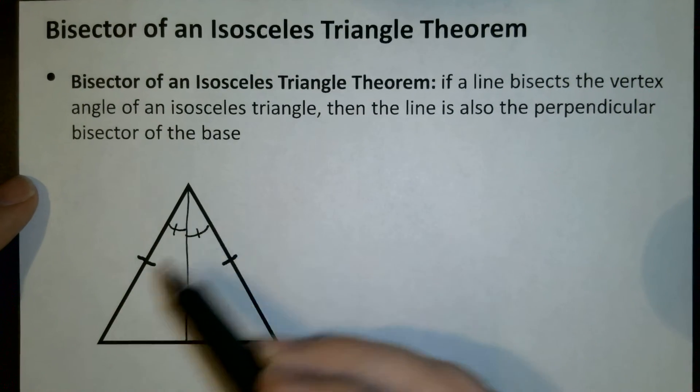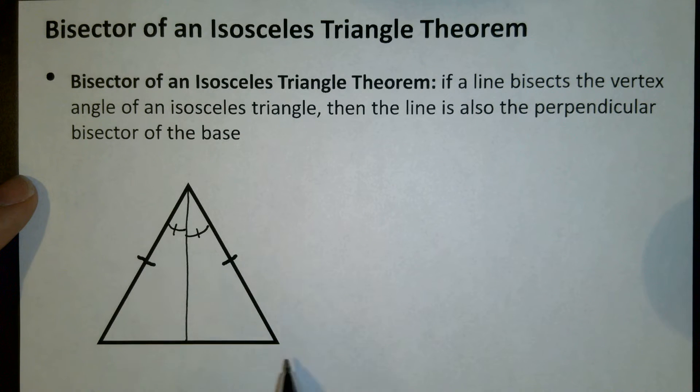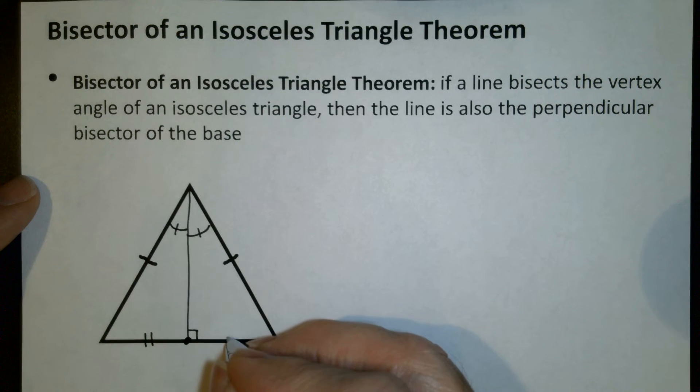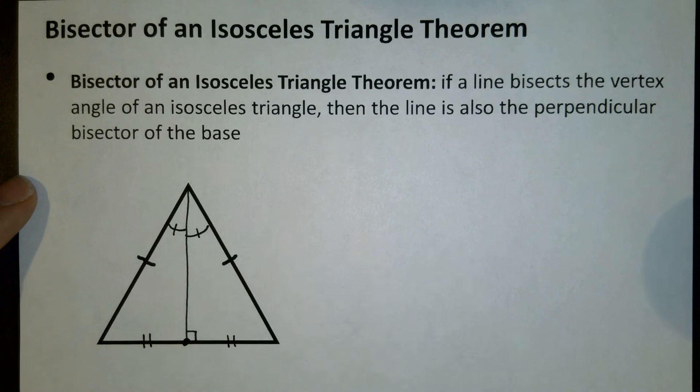Well we know that if these are the congruent sides, this third side at the bottom is the base. So this line is perpendicular to the base. And also it's a bisector of it. So it comes down here, hits the midpoint or the center of this side. And this part and this part are congruent.